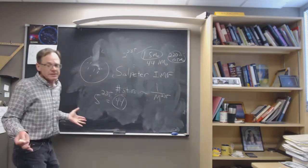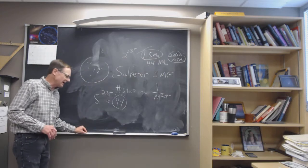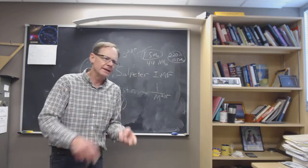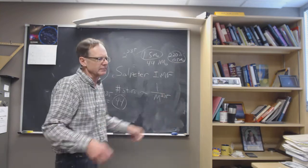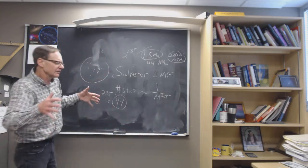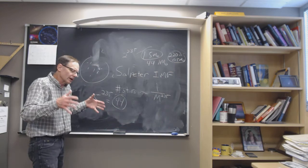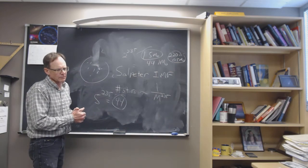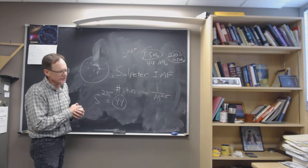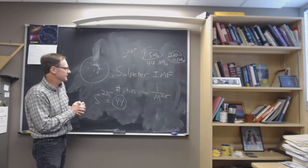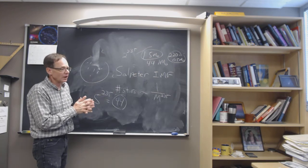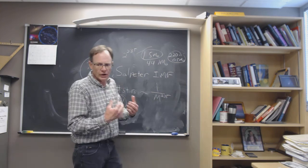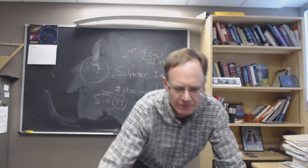That's our pre-main-sequence evolution summary: we preferentially make low-mass stars by going through protostar and pre-main-sequence star stages, accreting material and heating the core under gravity until nuclear fusion turns on at 10 million Kelvin — at which point it becomes a main sequence star. Next we'll talk about evolution on the main sequence. Thanks everybody.